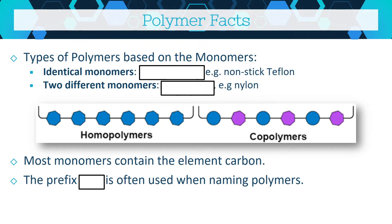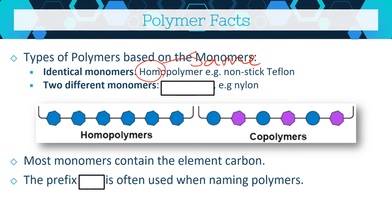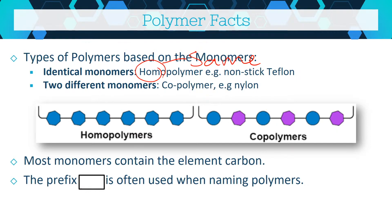There's another way you can classify your polymer, based on the kinds of monomers you have in it. If you have the same monomer throughout, we call it a homopolymer — 'homo' in science means same. Teflon is an example because you use the same tetrafluoroethene monomer all the way through. However, if you have two different monomers, you get what we call a copolymer — where the monomers alternate, like blue, purple, blue, purple. Nylon is an example of this, with two different monomers alternating to create one long chain.